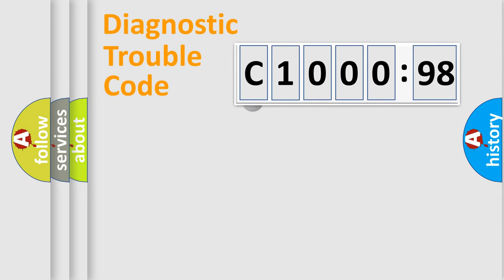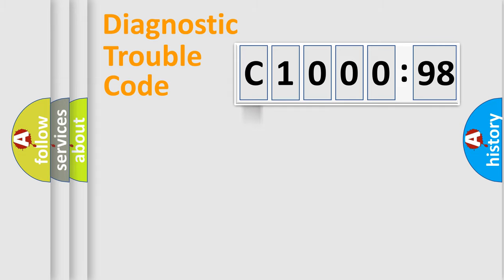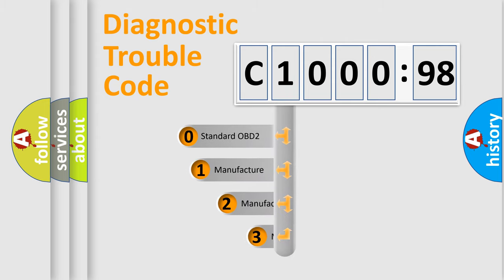First, let's look at the history of diagnostic fault code composition according to the OBD2 protocol, which is unified for all automakers since 2000. We divide the electric system of automobile into four basic units: powertrain, body, chassis, and network. This distribution is defined in the first character code.